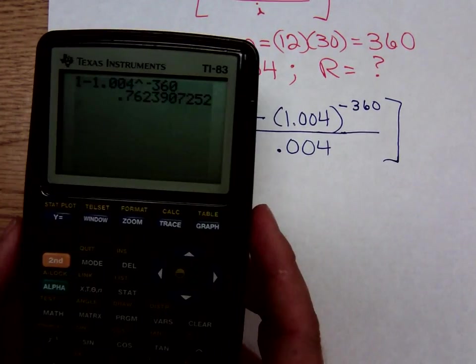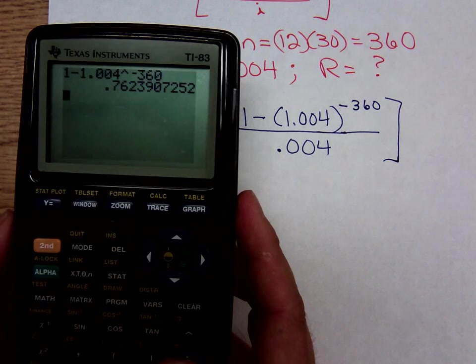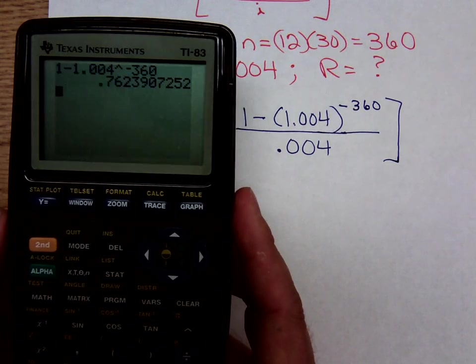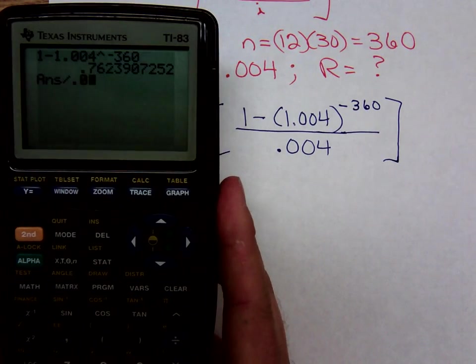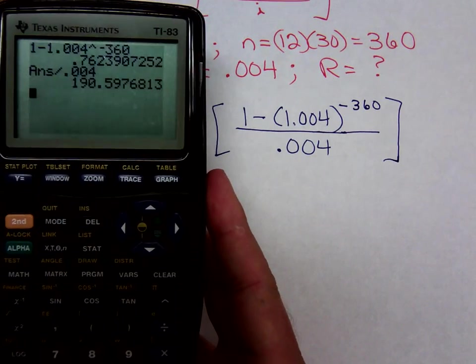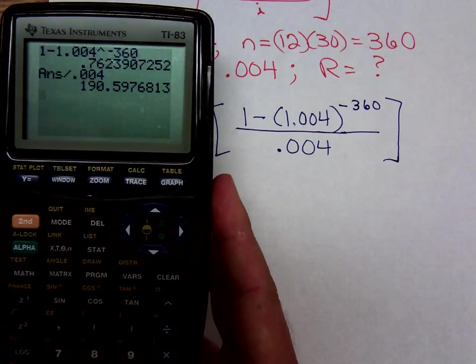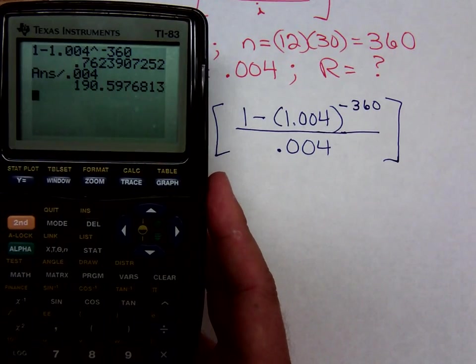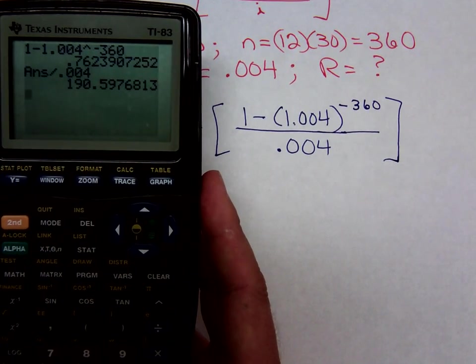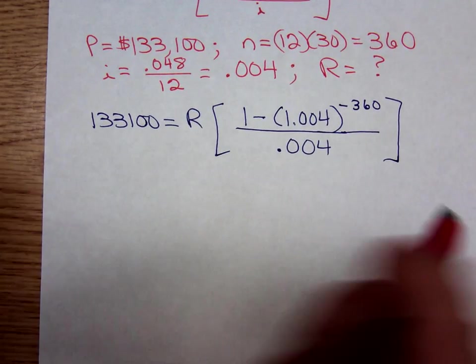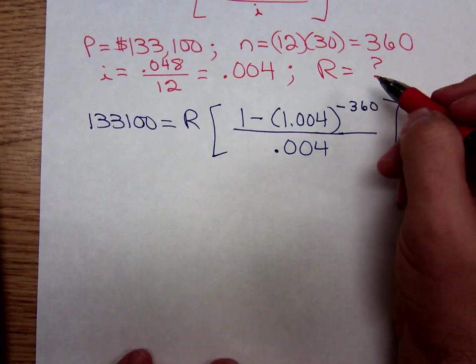And that's just the numerator. Let's see if we can see that. And then we have to divide it by 0.004. And so that bracket amount, I'm gonna write this down just because I want to make a point about that bracket amount, reduces to